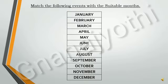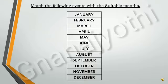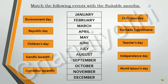Now, let us match the following events with the suitable months. The months given are: January, February, March, April, May, June, July, August, September, October, November, and December. The events given are: Environment Day, Republic Day, Children's Day, Gandhi Jayanti, Ambedkar Jayanti, Christmas Day, Kannada Rajyotsava, Teachers Day, Independence Day, and World Labor Day.